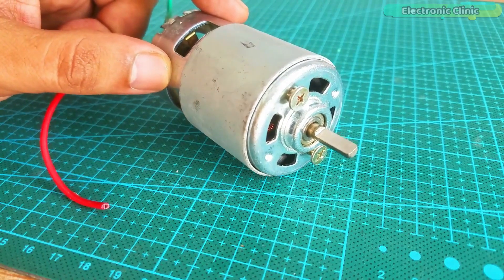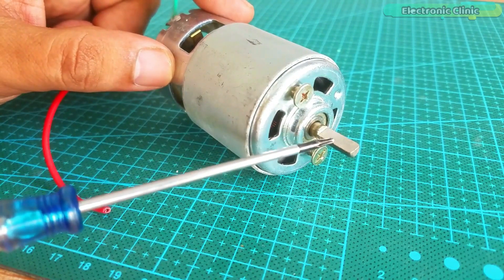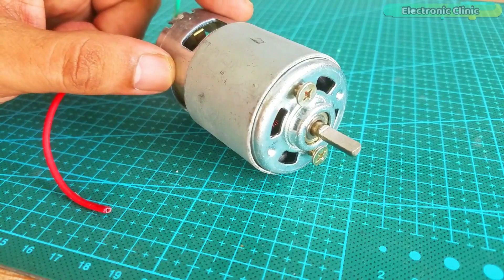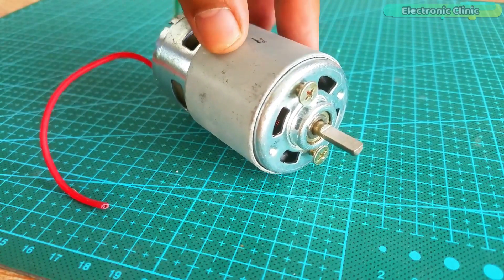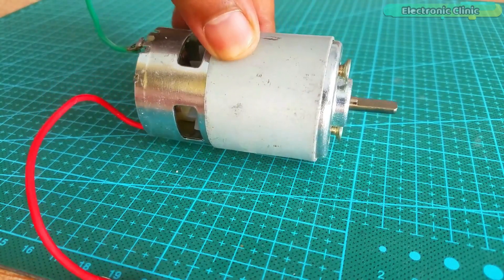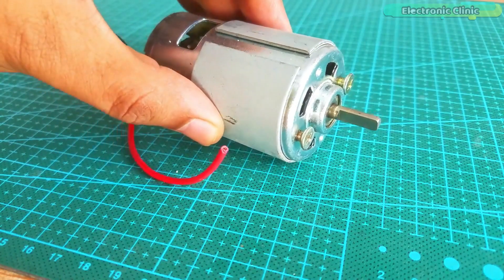This is the 775 DC motor with shaft diameter of approximately 5mm and has the rated voltage of 24 volts and the maximum voltage is 36 volts. The rated speed of the 775 motor is from 3500 to 7000 RPM revolutions per minute.